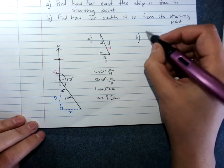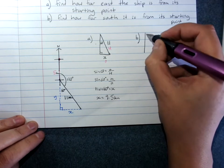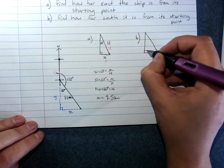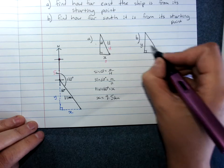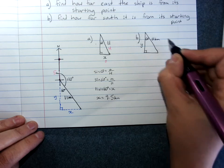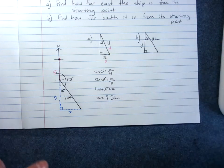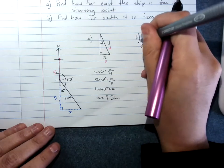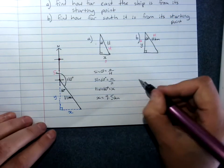Question B, I would again redraw the triangle. It's safest. This time we're getting Y. Label your sides, adjacent and hypotenuse. Choose your ratio, which is cos.